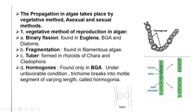The first vegetative method of reproduction in algae is binary fission. This is the type of fission in which the parent cell divides into two identical daughter cells, where duplication of genetic material takes place and each cell has the potential to grow to the size of the original cell. Binary fission is found in Euglena, blue-green algae (BGA), and diatoms.